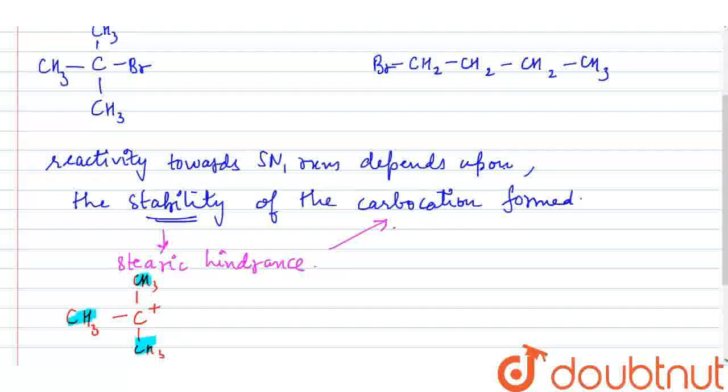So, it has more steric hindrance and if I draw this for n-butyl bromide, the carbocation will be this. We can see that it has only one alkyl chain attached to it and only two hydrogens. So, there is less steric hindrance compared to the tertiary butyl bromide.